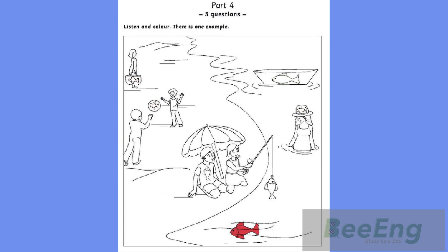4. Find the girl's bag. There's a fish on it. Color that fish brown. Brown? Yes, please.